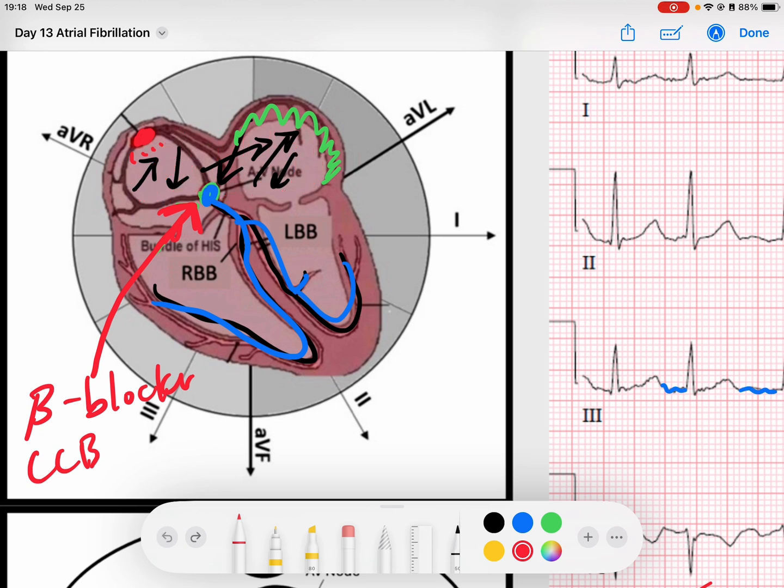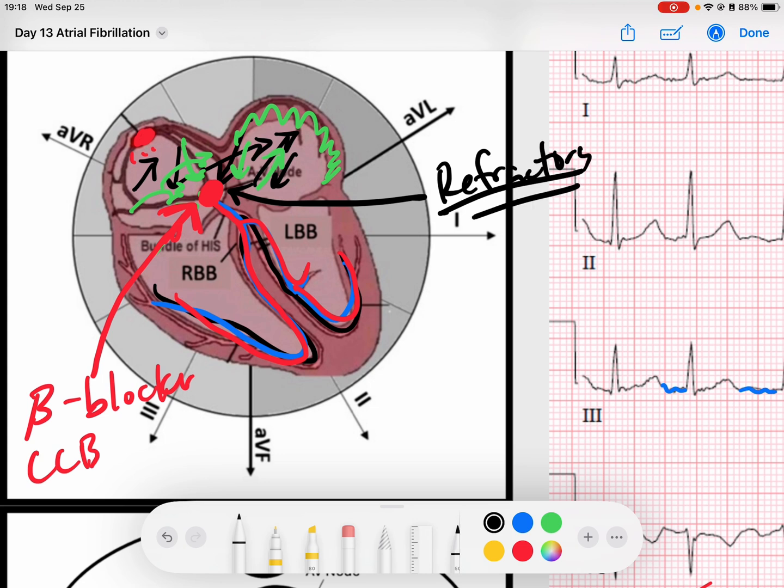What ends up happening is you end up getting these reentry fibrillatory waves within the atria that bombard the AV node. My QRS complexes are determined by my AV node's ability to conduct. Because remember, every time that this AV node conducts signal down into the ventricles, every time it does that, it becomes refractory. The AV node itself has to repolarize. That amount of time that it's refractory is how long it takes to go from beat to beat.